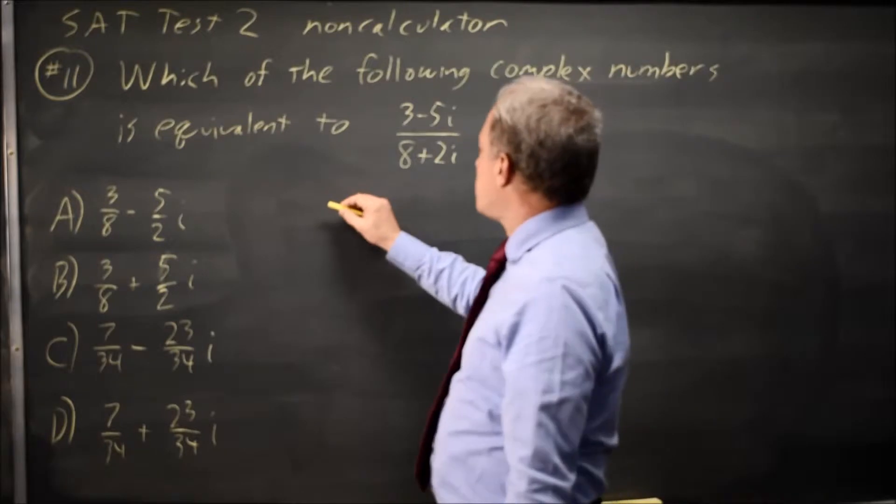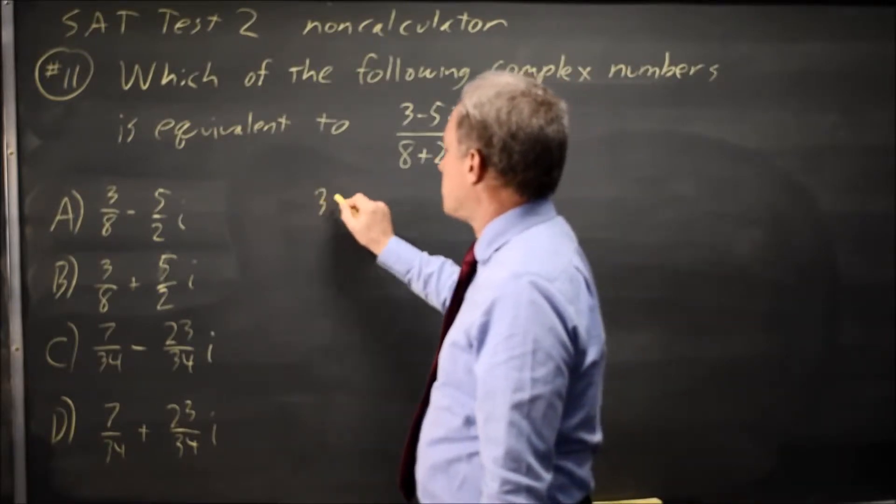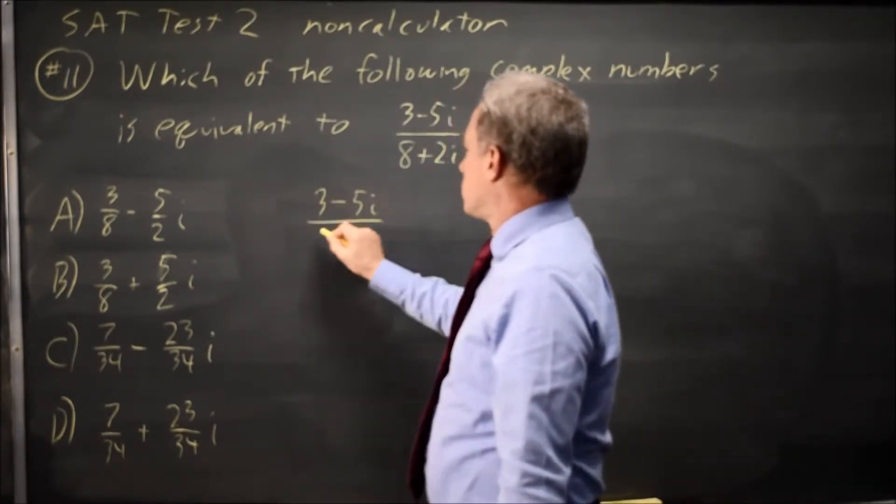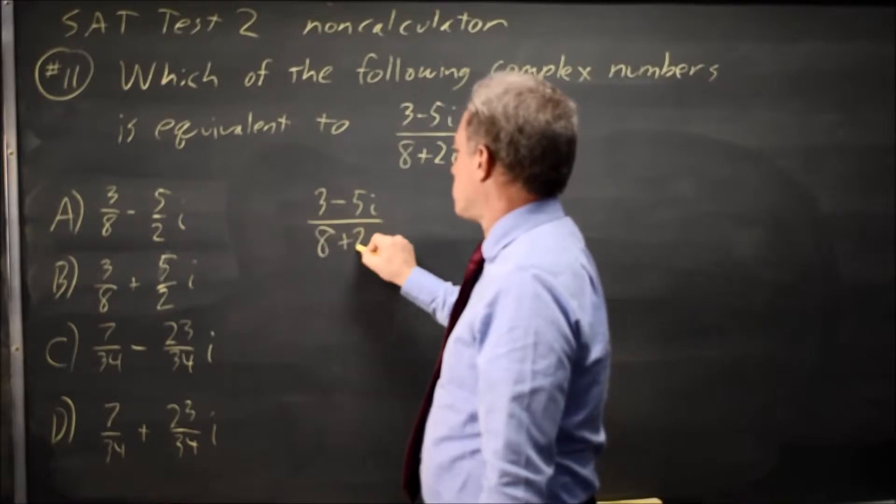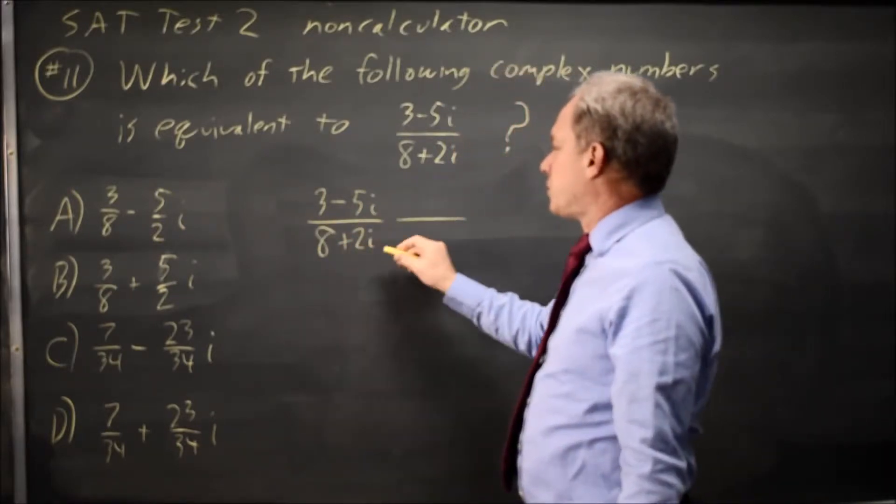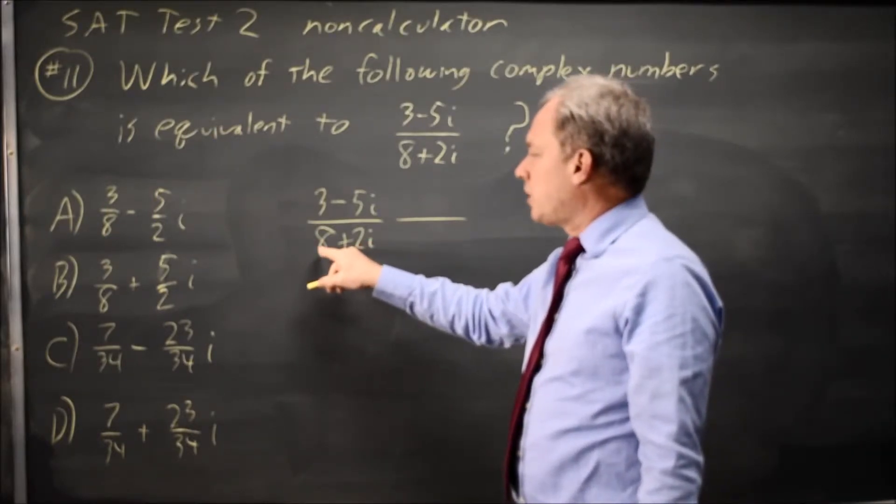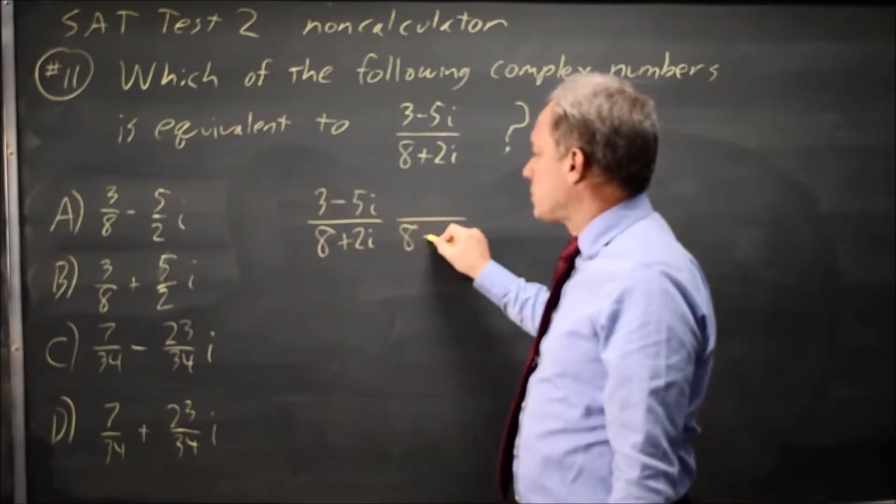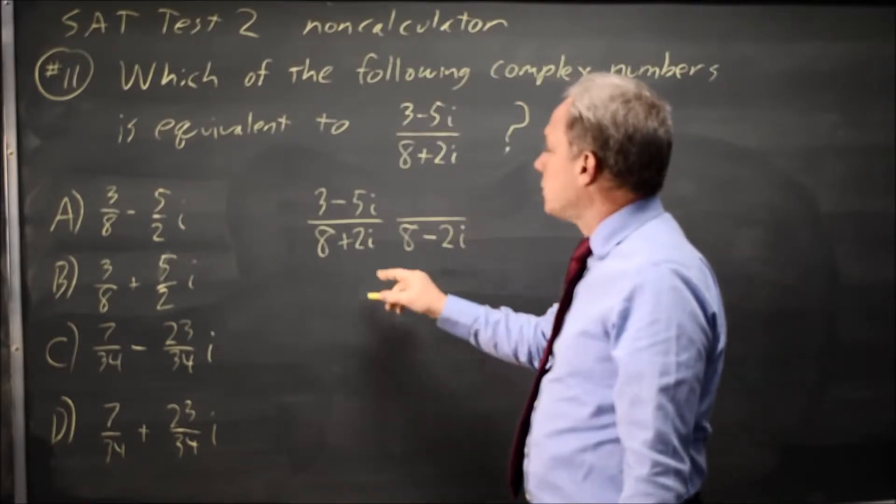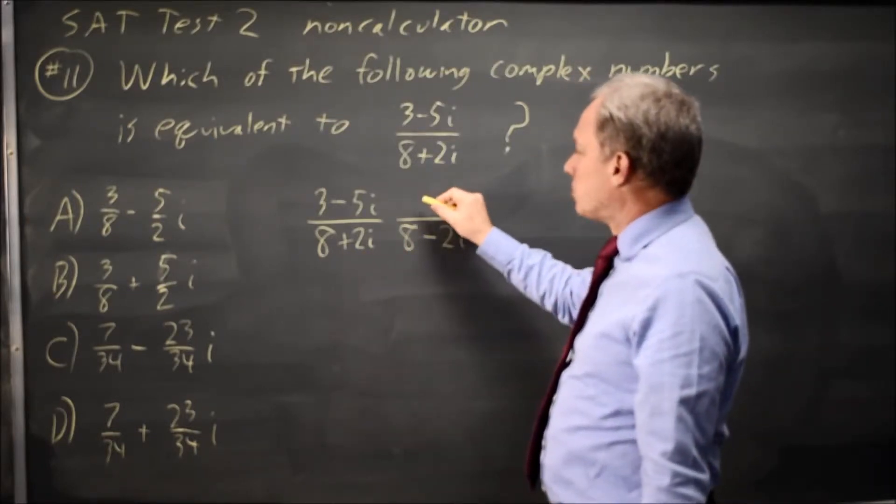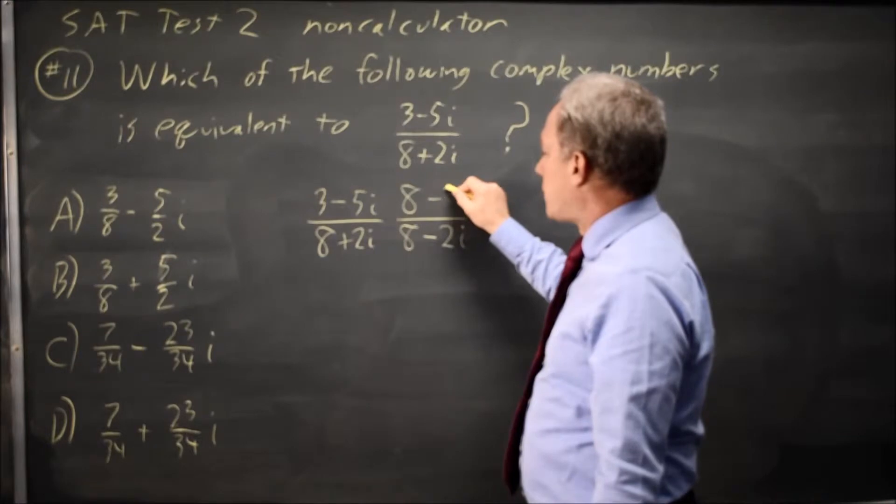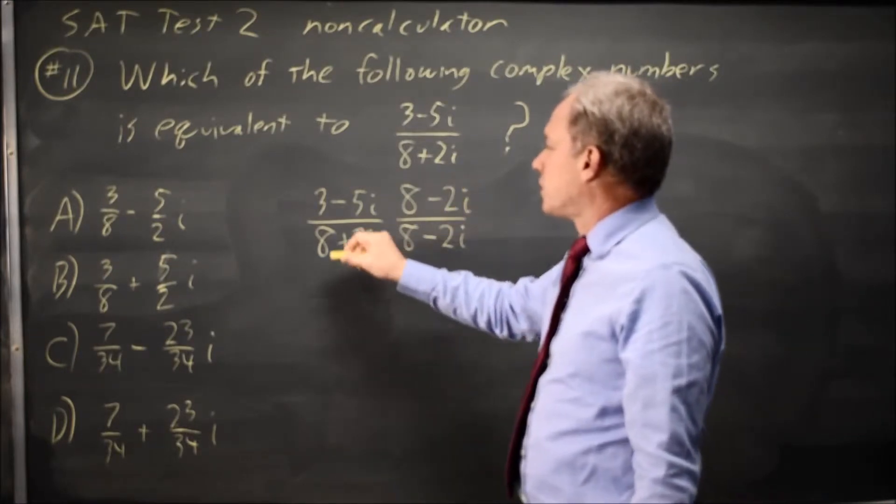In this case, we're dividing, and to divide, we take our complex number and multiply by the conjugate of the denominator over itself. To take the complex conjugate, you keep the real part, flip the sign on the imaginary part, and multiply the numerator and denominator by that same expression, the complex conjugate of the denominator.